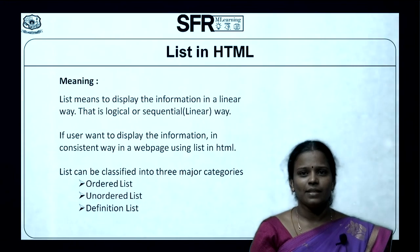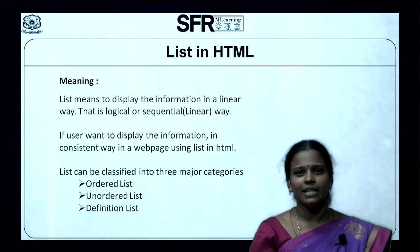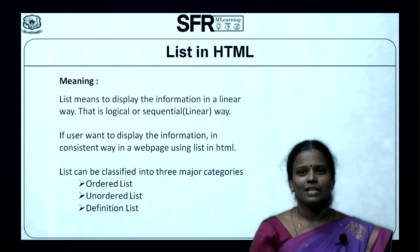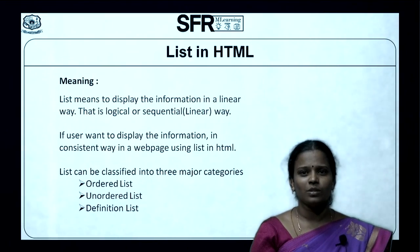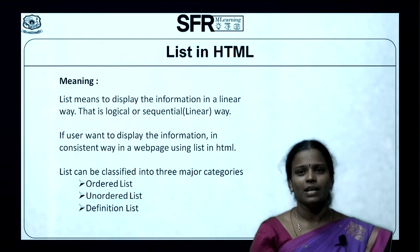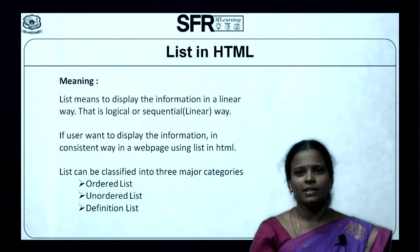Now let us see the meaning of List. List means to display the information in a linear way, that is a logical or sequential way. If a user wants to display the information in a consistent or coherent way in a web page, they use List in HTML.